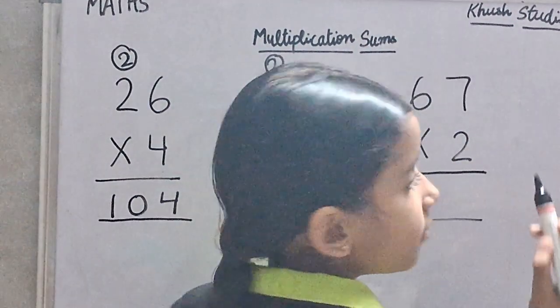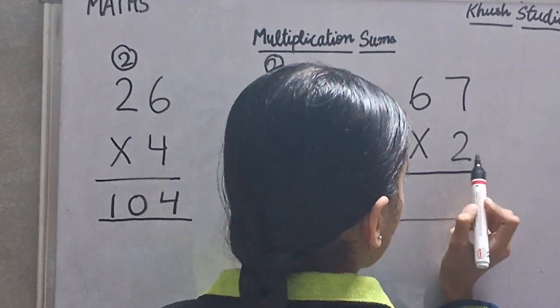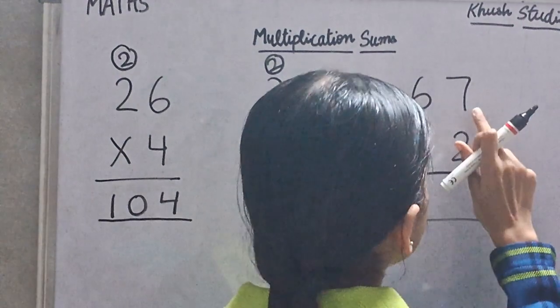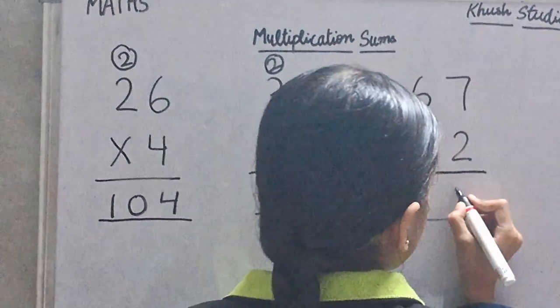We will multiply 67 multiply by 2. First we will multiply 7 by 2. 7 twos are 14.